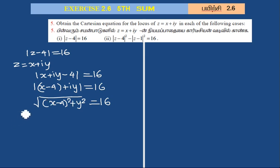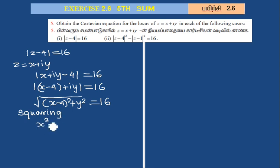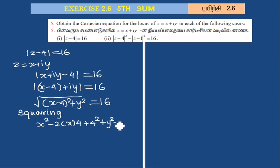To eliminate the root, square both sides. Then expand the square using the formula a squared minus 2ab plus b squared: that is, x minus 4 squared gives x squared minus 2 into x into 4, plus 4 squared. So y squared is also included, and the right side is 16 squared.